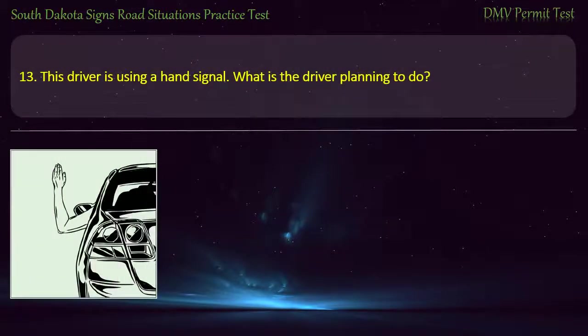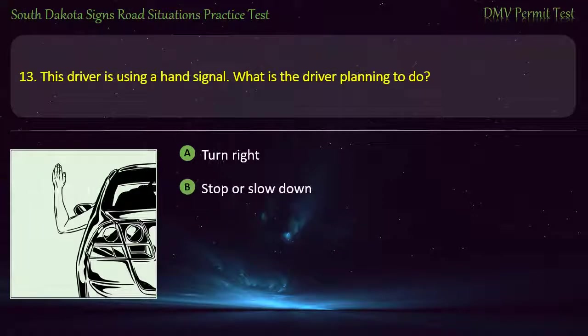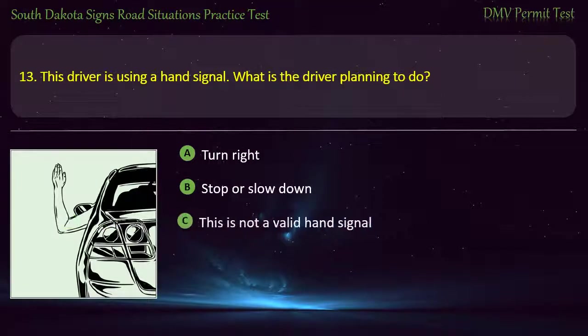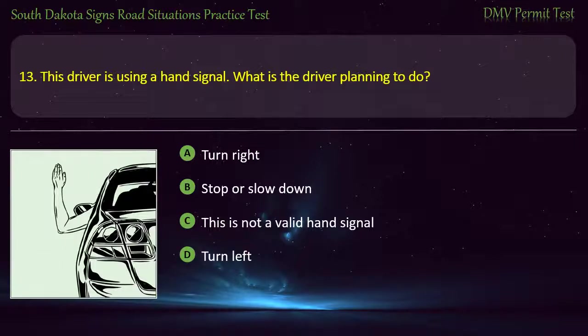Question 13: This driver is using a hand signal. What is the driver planning to do? Options: Turn right; Stop or slow down; This is not a valid hand signal; Turn left. Answer: Turn right.